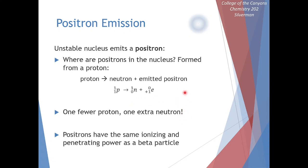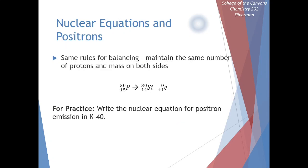We end up with the same overall mass, one less proton, one extra neutron. Here's an example of a positron emission reaction. We have phosphorus turning into silicon. Phosphorus-30 turning into silicon-30 by emitting a positron.